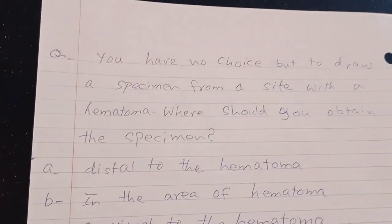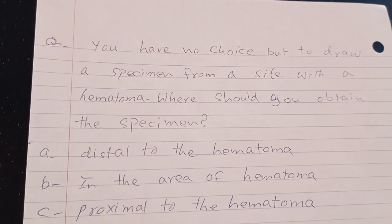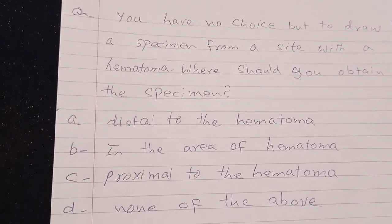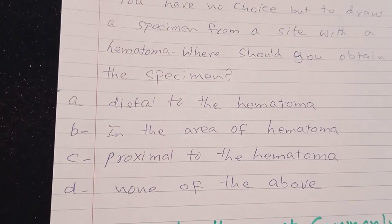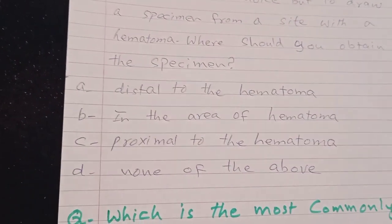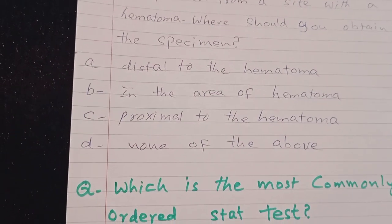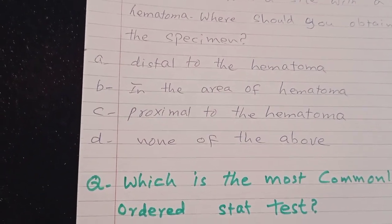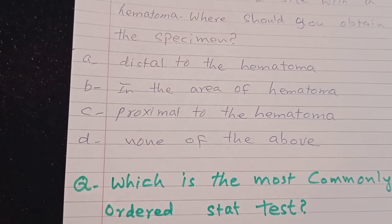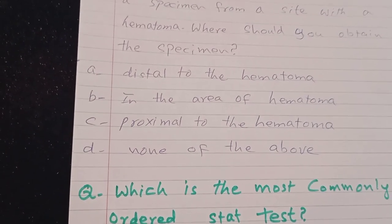You have no choice but to draw a specimen from a site with a hematoma. Where would you obtain this specimen? Distal to the hematoma, in the area of hematoma, proximal to the hematoma, none of the above. Distal to the hematoma. Answer is A.